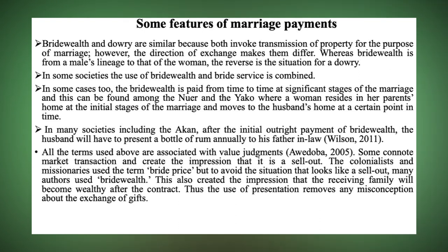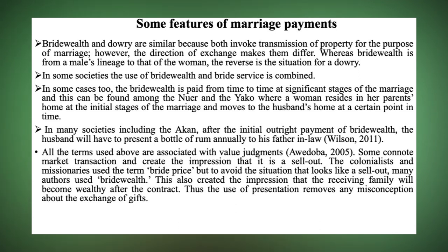In many societies, the bride wealth can be paid outright — during the marriage ceremony you pay the bride wealth and you are done with it. In some societies, you pay in installments. So during the marriage contraction you give out five cattle, then in the next two years you present another two cattle, and so on. So in some instances it is paid in installment, whilst in some cases it is paid outright.